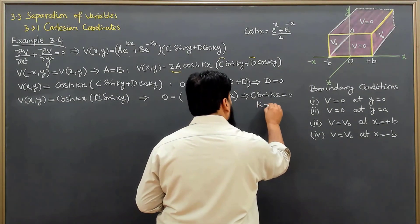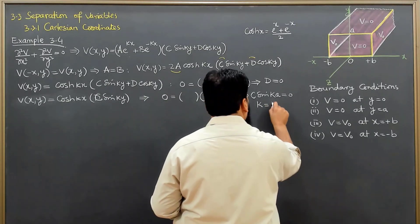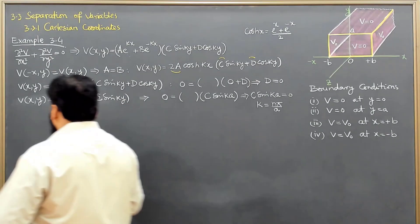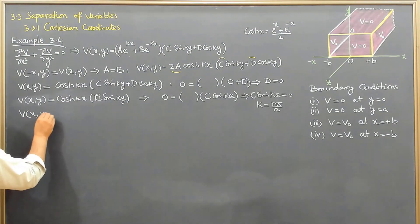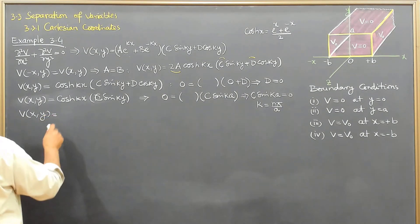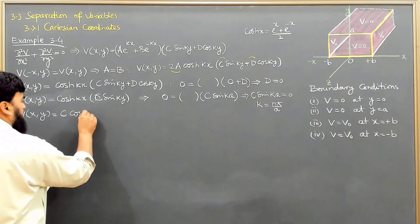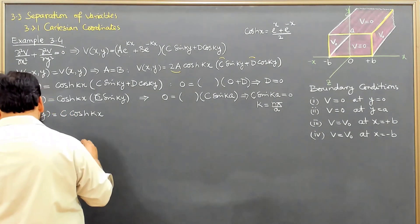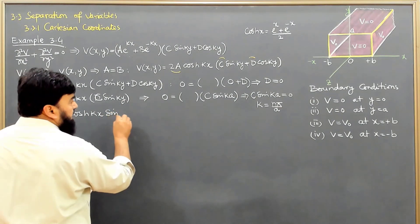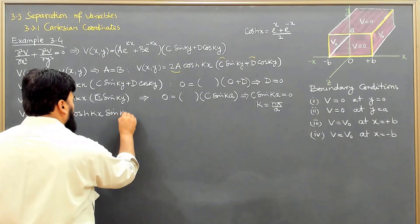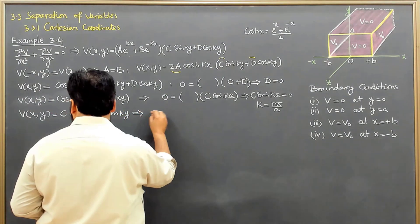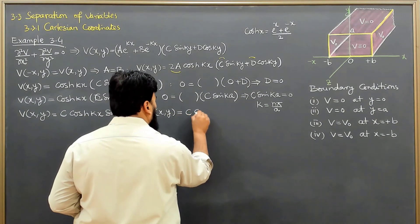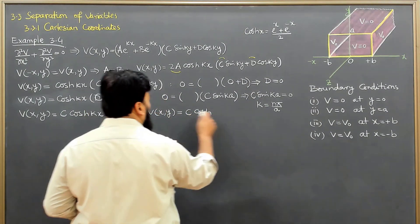We have done this in the previous example in detail. So I can write that V(x,y) is equal to c·cosh(kx)·sin(ky). Now putting the value of k in here, we get V(x,y) equals c·cosh(nπx/a)·sin(nπy/a).